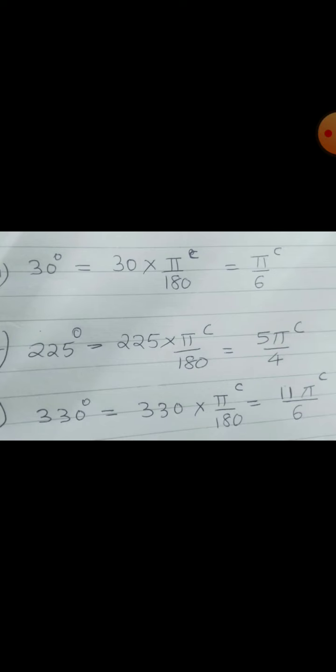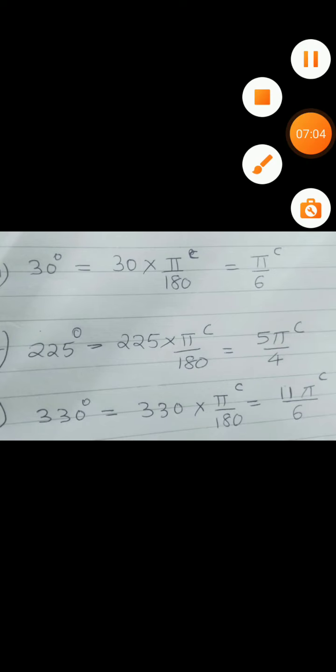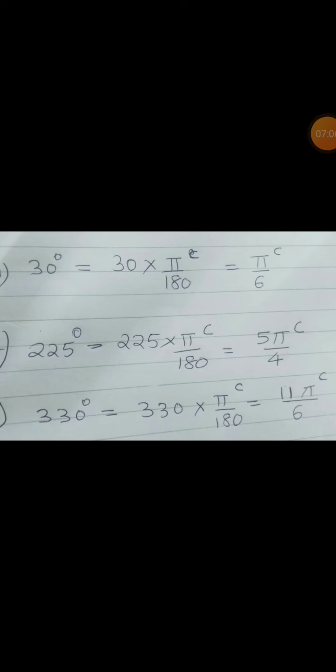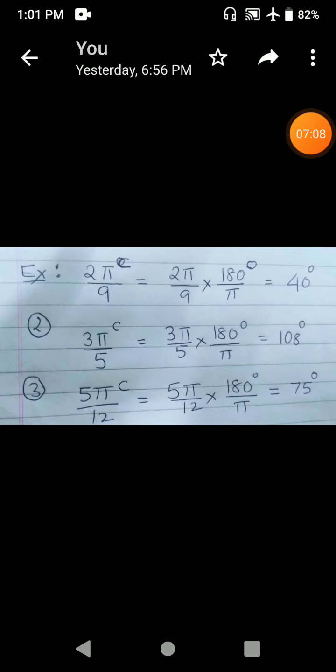This is how you convert standard angles into radians. Now let us see radian to degree. How to convert 2π by 9 radian? So 2π by 9 radian is equal to 2π by 9 into 180 by π.